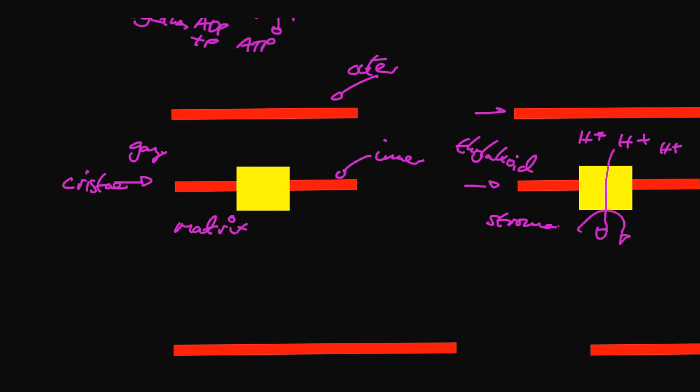The protons build up inside the mitochondria and they flow out back into the matrix through ATP synthase. In both circumstances, this generates ATP.